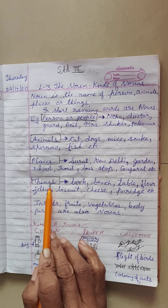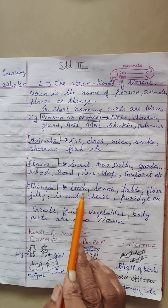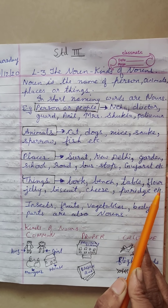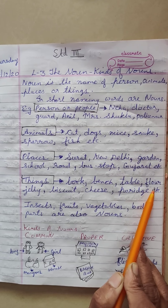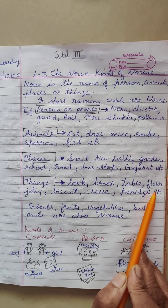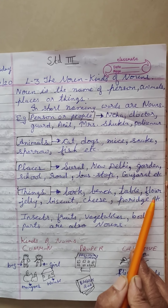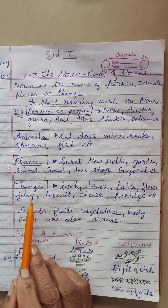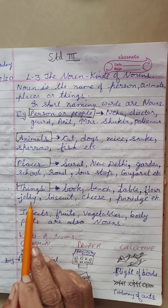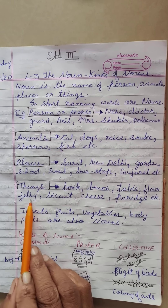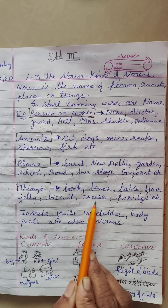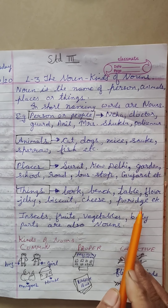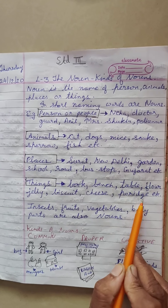Now things. Things related like book, bench, table, floor, wheat flour, jowar flour, maize flour, bajri flour etc. These types of flours are there. Jelly, biscuit, cheese, porridge, kheer - milky kheer and that is called porridge.